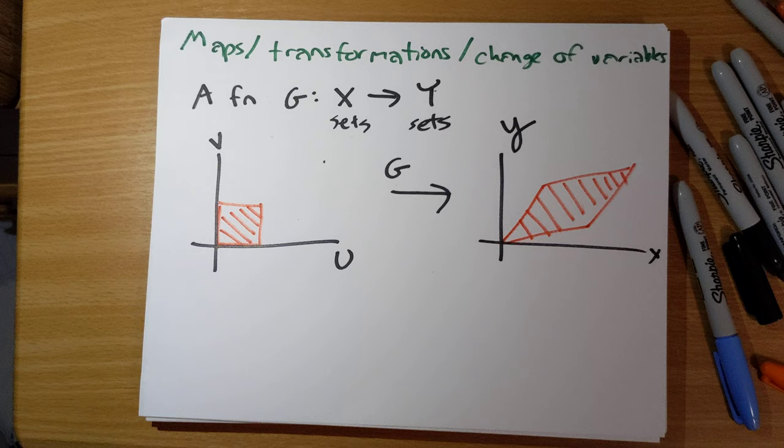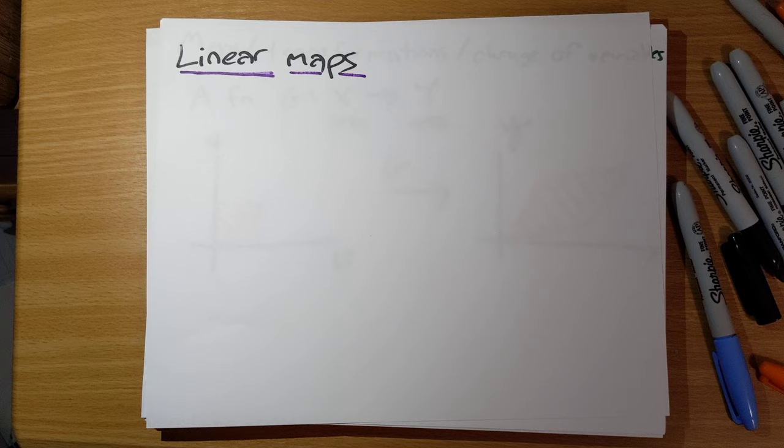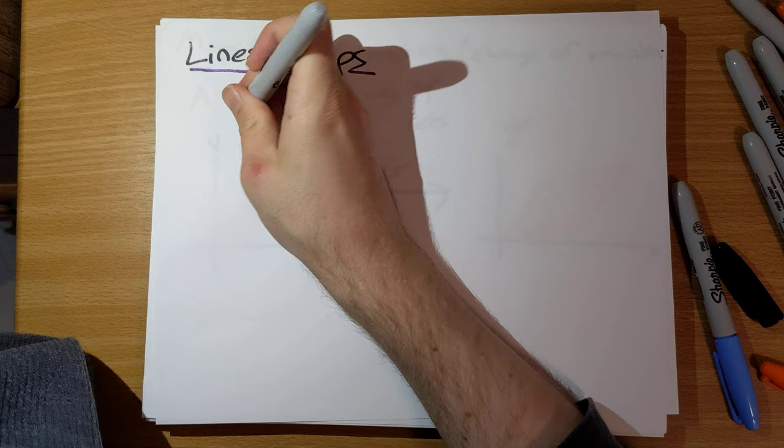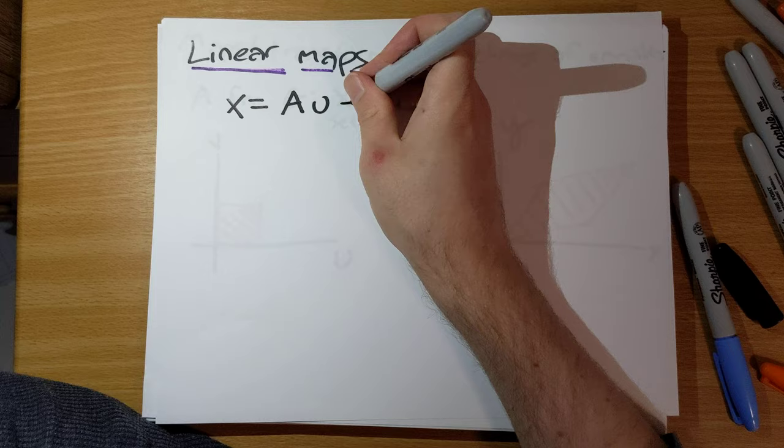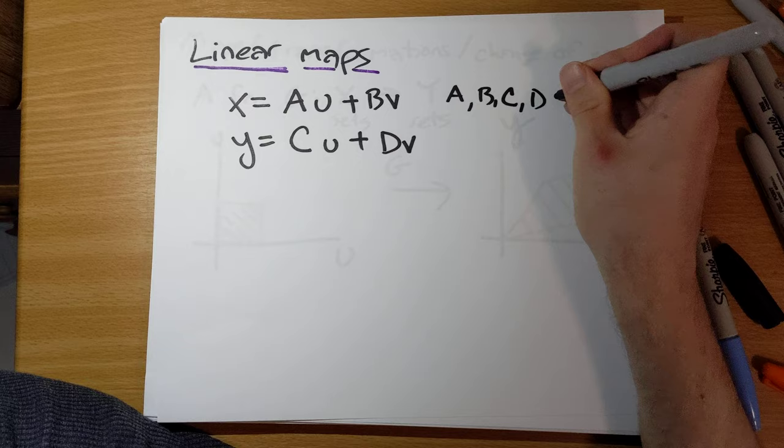An important special case is what we call linear maps. A linear transformation has the form: x equals a constant times u plus a constant times v, and y equals a constant times u plus a constant times v, where a, b, c, and d are all constants.